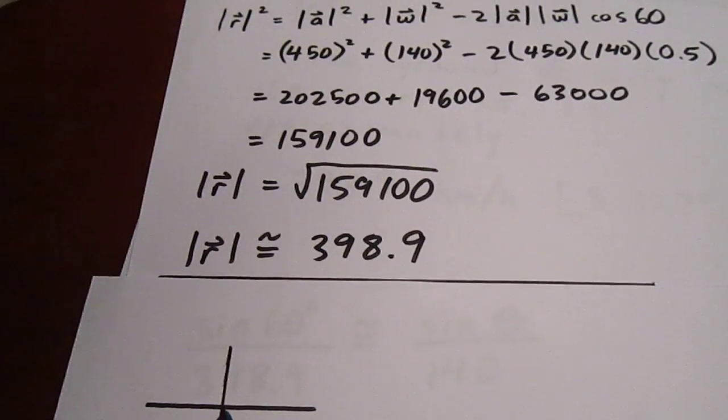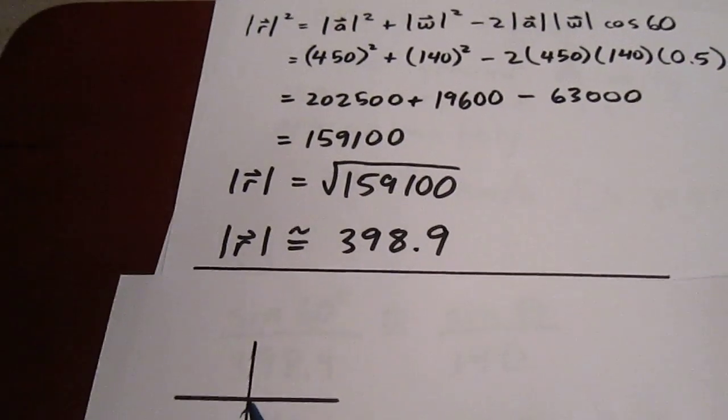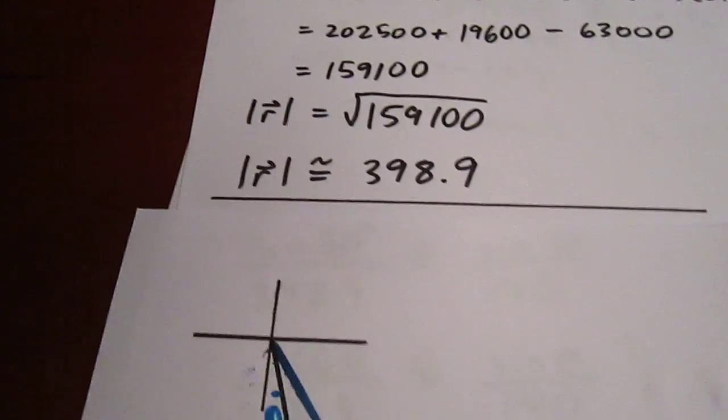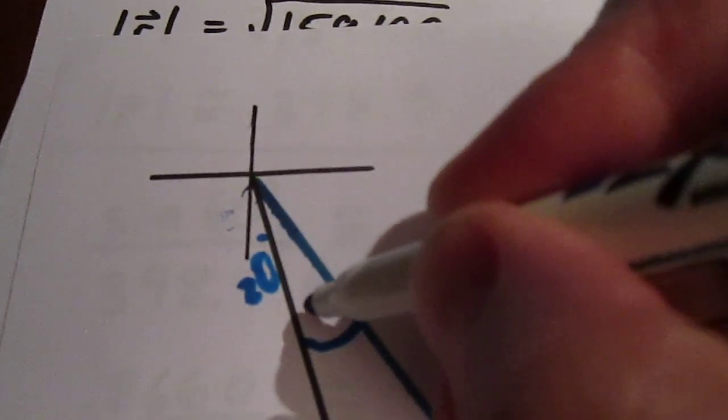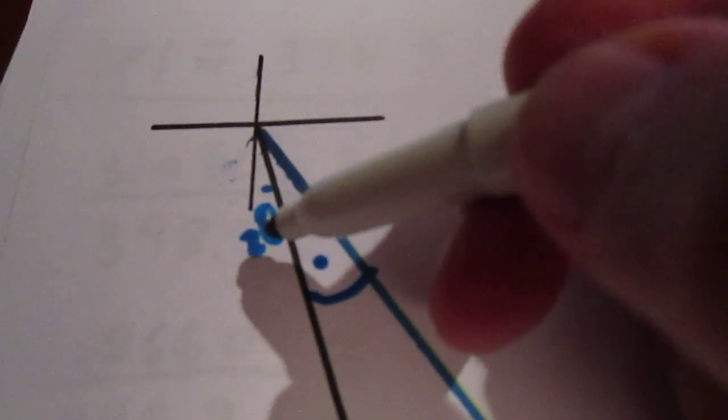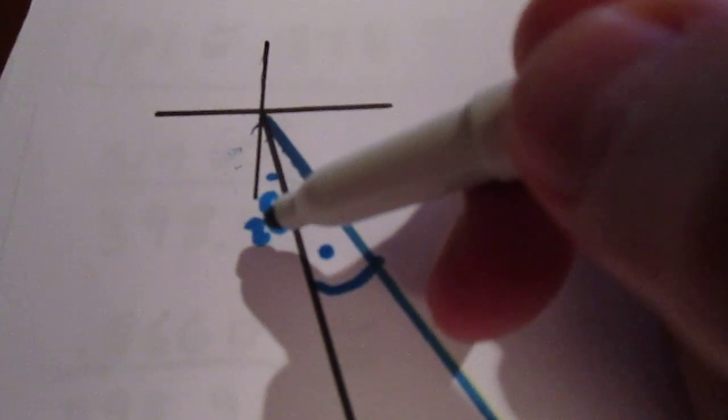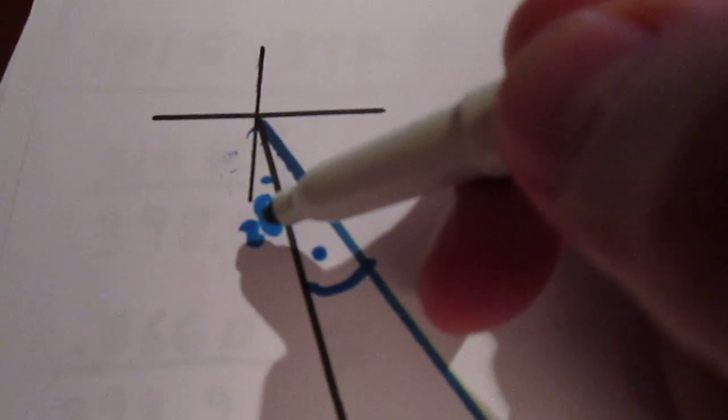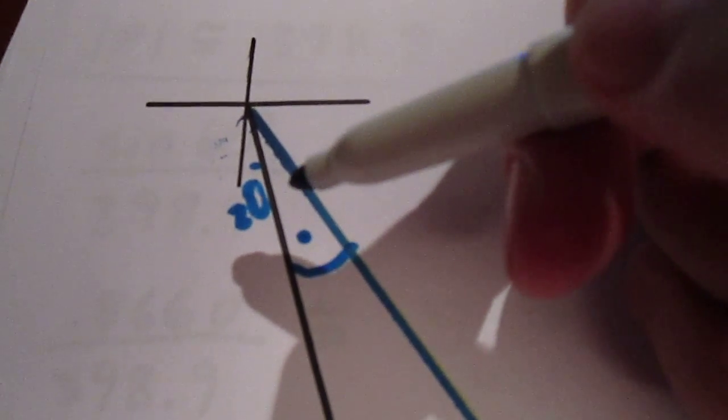We were asked for a velocity though, which means we need direction, which means we need an angle. What we're going to do is look for the angle right here. If we can find that angle, then what we can do is add it to the 20 degrees that we're already traveling east of south and we'll have an appropriate direction for our airplane.